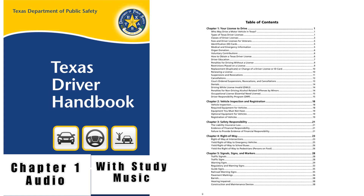Verification of Enrollment and Attendance (VOE) Form: If you are under 18 years of age and applying for your first Texas driver license, learner license, or provisional license, you must provide evidence that you: 1. Have obtained a high school diploma or its equivalent, or 2. Are a student enrolled in a public, private, or home school and attended school for at least 80 days in the fall or spring semester preceding the date of application, or 3. Have been enrolled for at least 45 days and are enrolled at the time of application in a program to prepare individuals to pass the high school equivalency exam. This information is included on the VOE Form issued by your school.